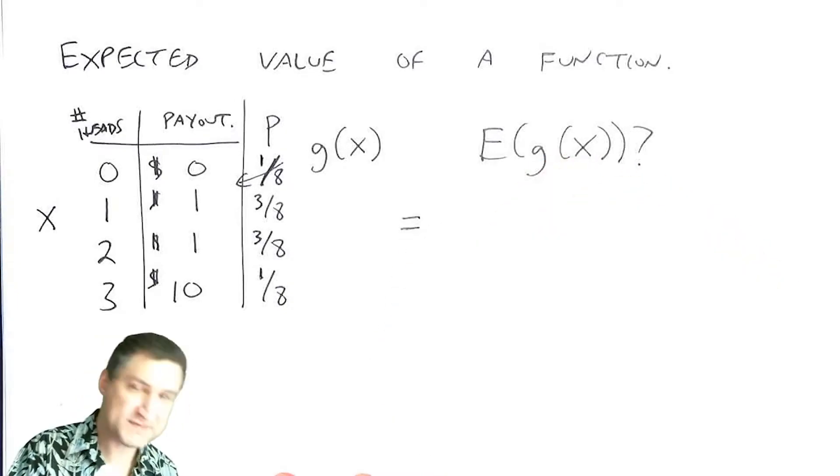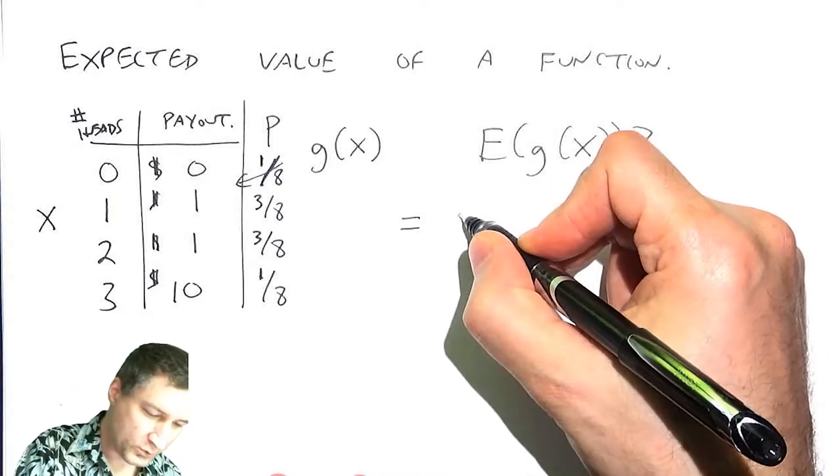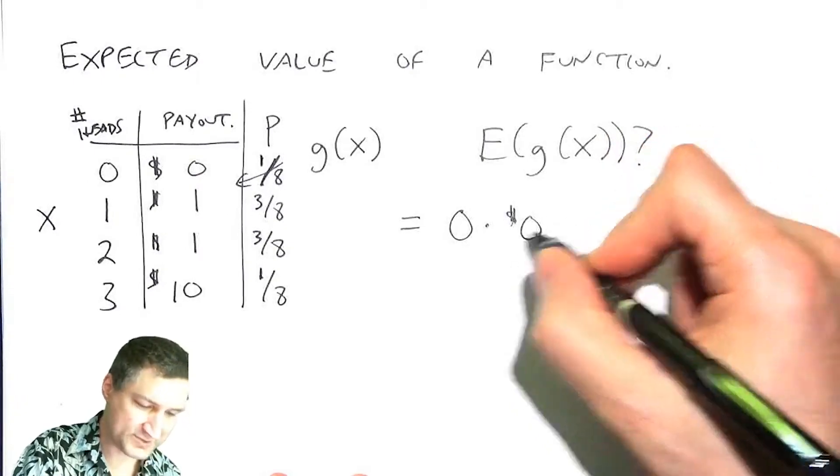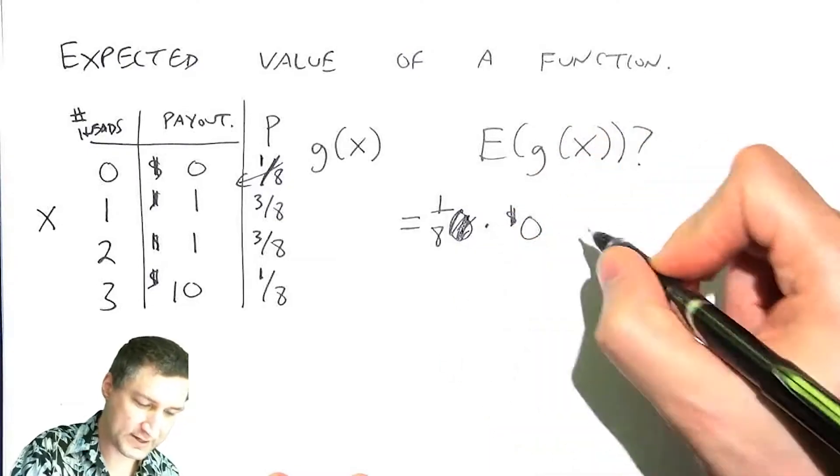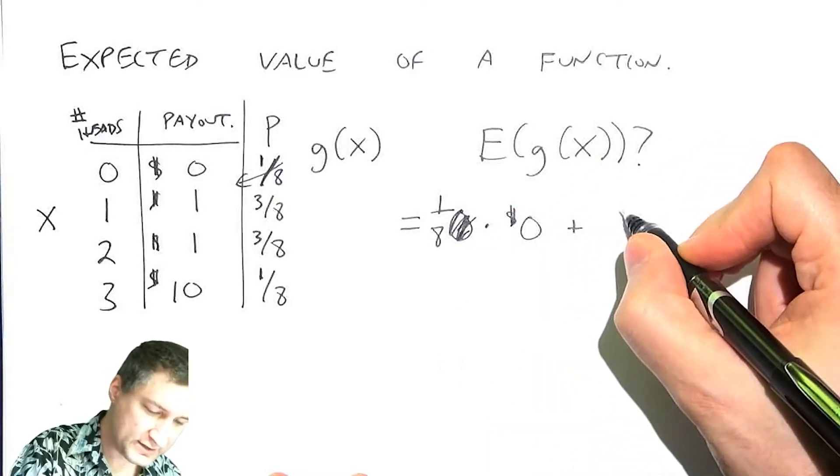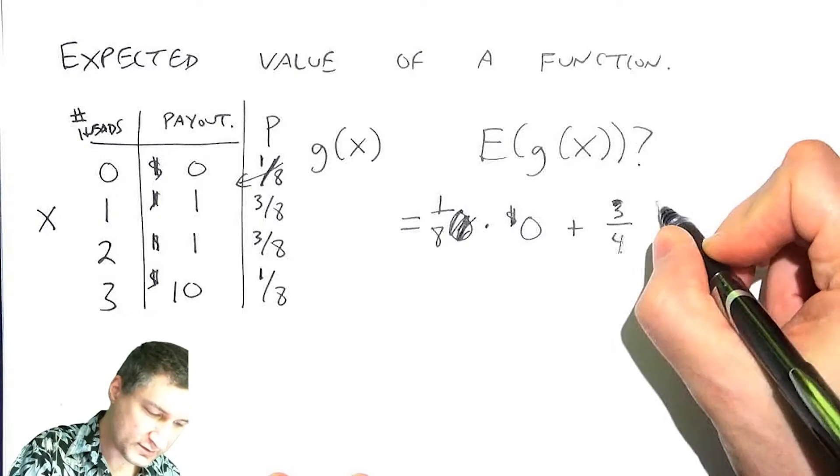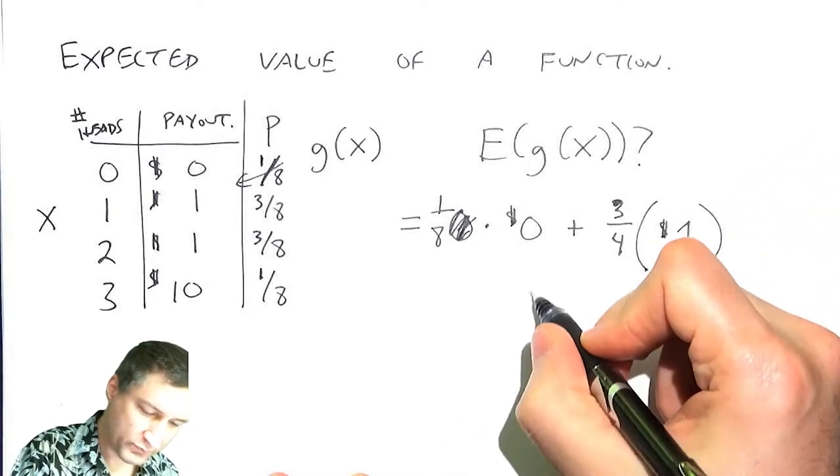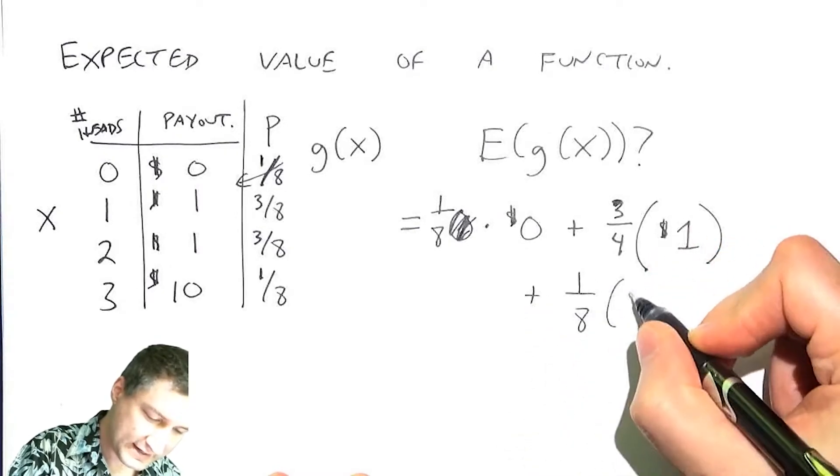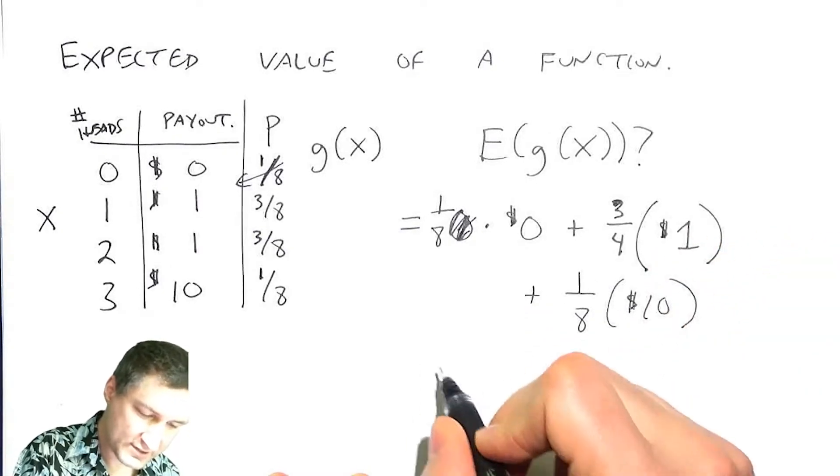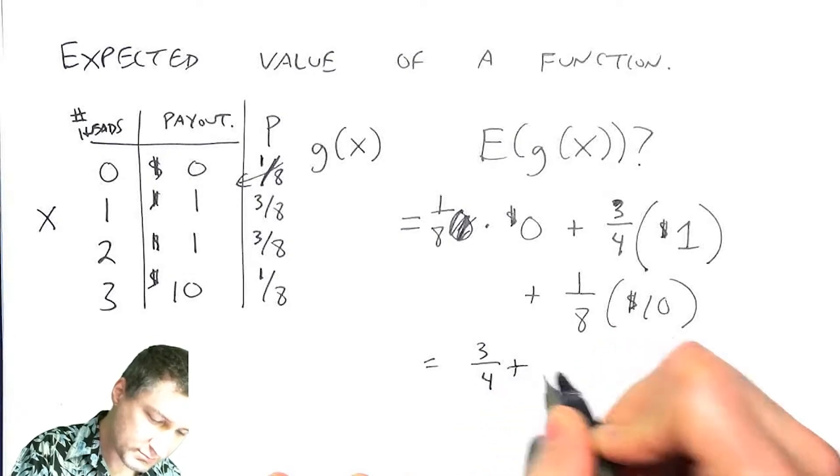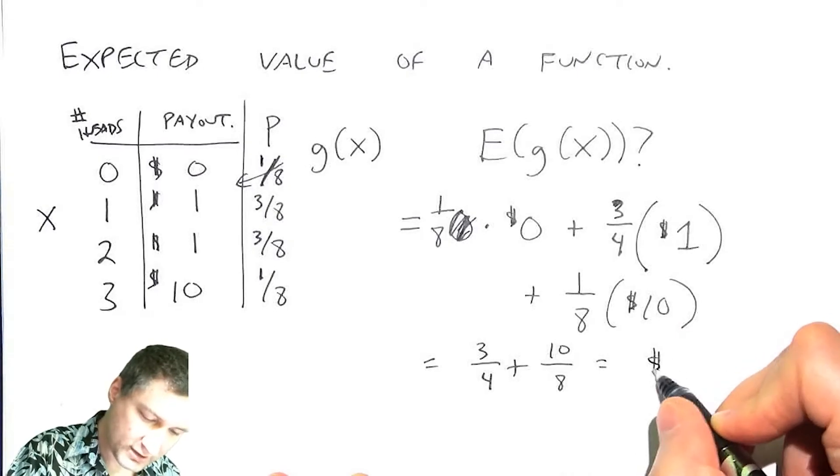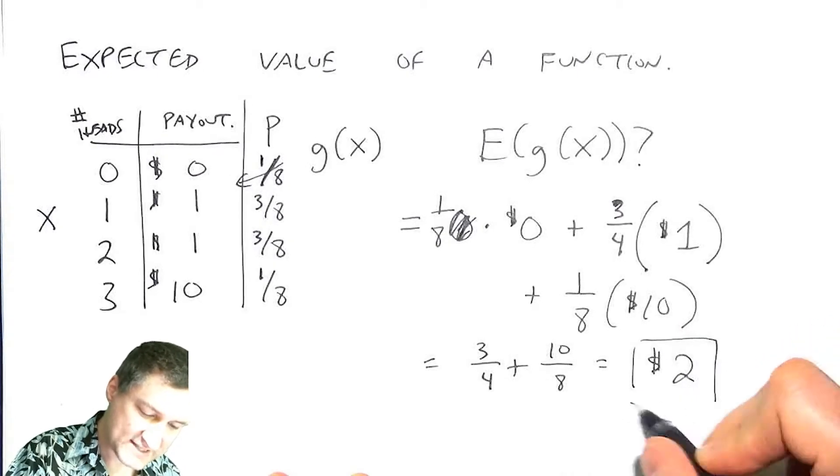So I can compute the expected value of this function of X by saying, okay, with probability 1 eighth, I get payout of $0. With probability 3 quarters, I get payout of $1. With probability 1 eighth, I get payout of $10. So my expected value is 3 quarters plus 10 eighths, which is 5 quarters. So overall, I get $2 as my expected value.